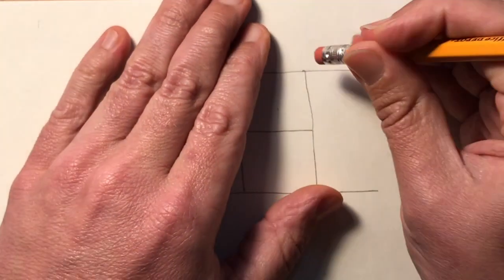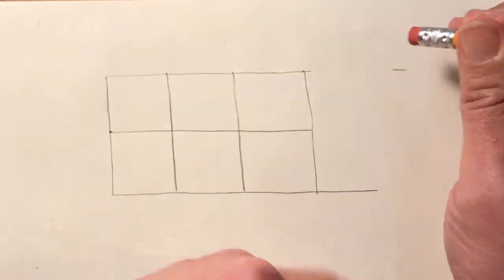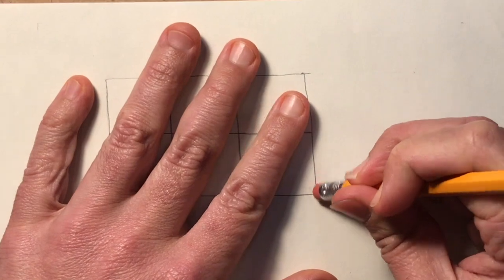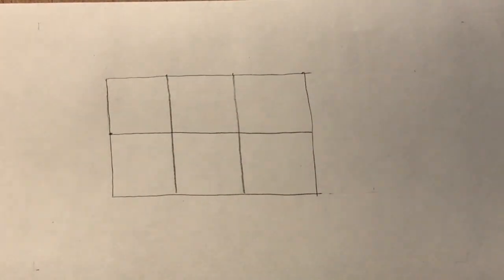All right so that's what I think is going to be a decent two by three and there we go. Perfect. You might want to erase your lines at the end so you might want to write light but I'm going to write heavy so you can make sure you see.